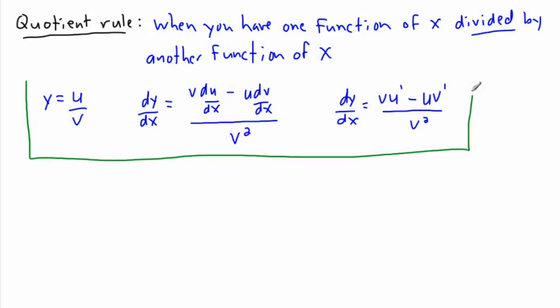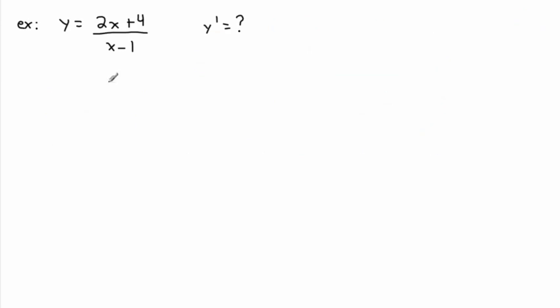Let's take a look at an example. We've got 2x plus 4 over x minus 1 as our original function, and we want the derivative.